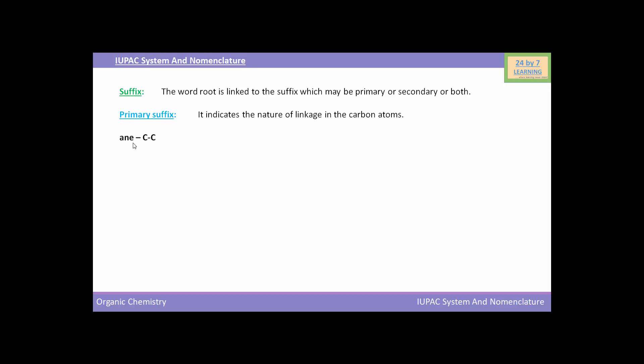For example, ANE is represented by a C single bond C, and ENE is represented by a C double bond C.